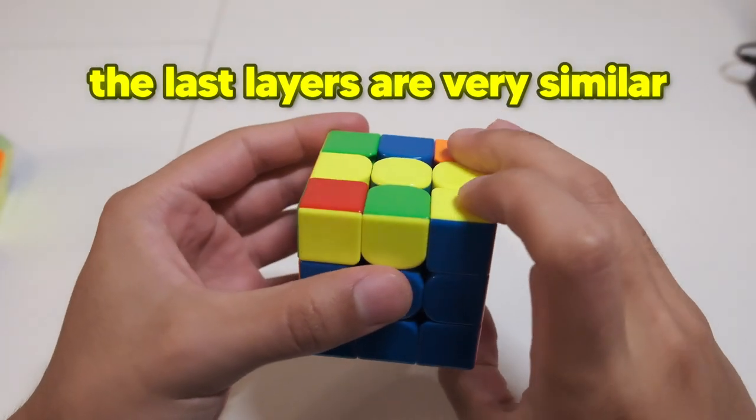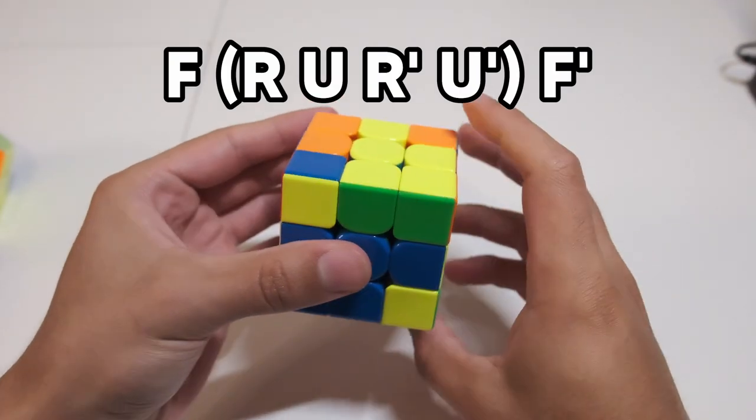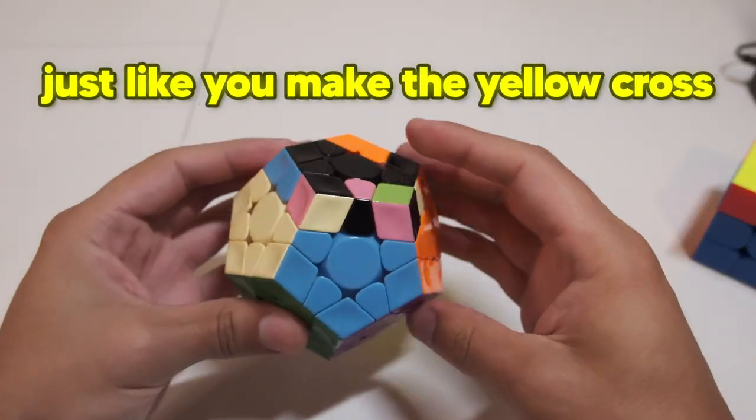Lastly, the last layers are very similar in which the F-Sexy F' algorithm is used to make the star just like you make the yellow cross.